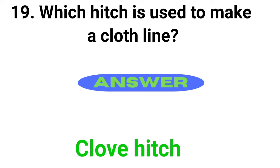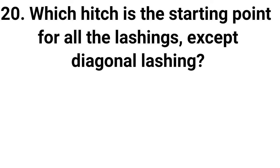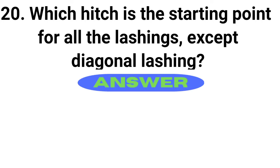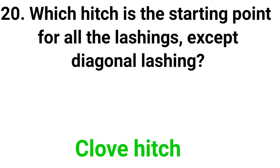Question 19: Answer is Clove Hitch. Question 20: Which hitch is the starting point for all the lashings except diagonal lashings? Answer is Clove Hitch.